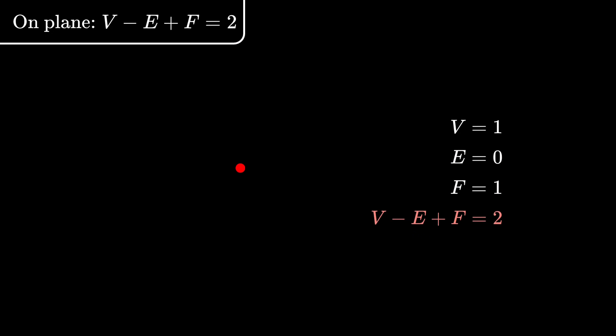And if we subsequently add more edges to it, that is the inductive step, there are two possibilities. The first possibility is we add an edge and a vertex, in which case V and E both increase by 1, so V minus E plus F remains unchanged.